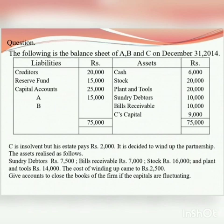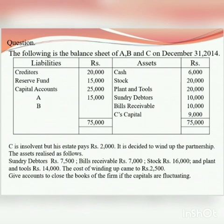Next is insolvency of partners related to this question. The following is the balance sheet of A, B, and C on December 31st, 2014. Liabilities include creditors, reserve fund, and capital accounts of A and B. Assets include cash, stock, plant and tools, sundry debtors, bills receivable, and C's capital. C is insolvent but his estate pays Rs. 2,000.